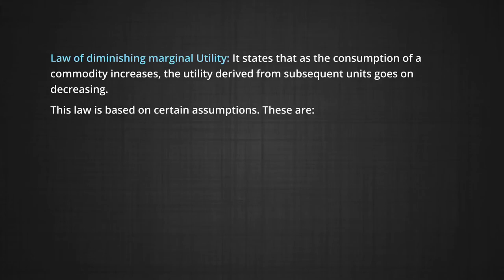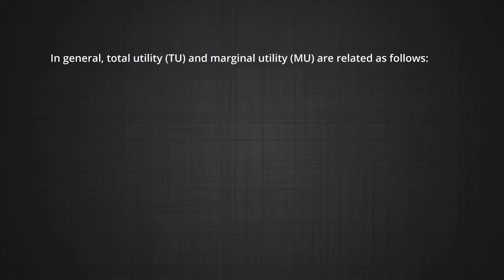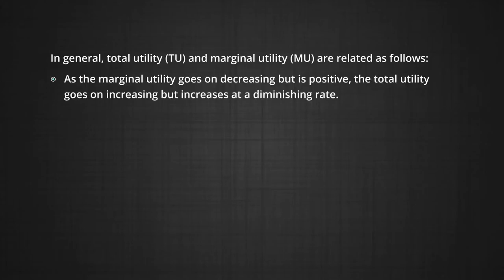This law is based on certain assumptions. These are: one, that all units of the commodity are homogeneous — that is, they are identical. Second, the time of consumption remains the same. In general, total utility and marginal utility are related thus: as the marginal utility goes on decreasing, the total utility goes on increasing as long as the marginal utility is positive, but it increases at a diminishing rate.